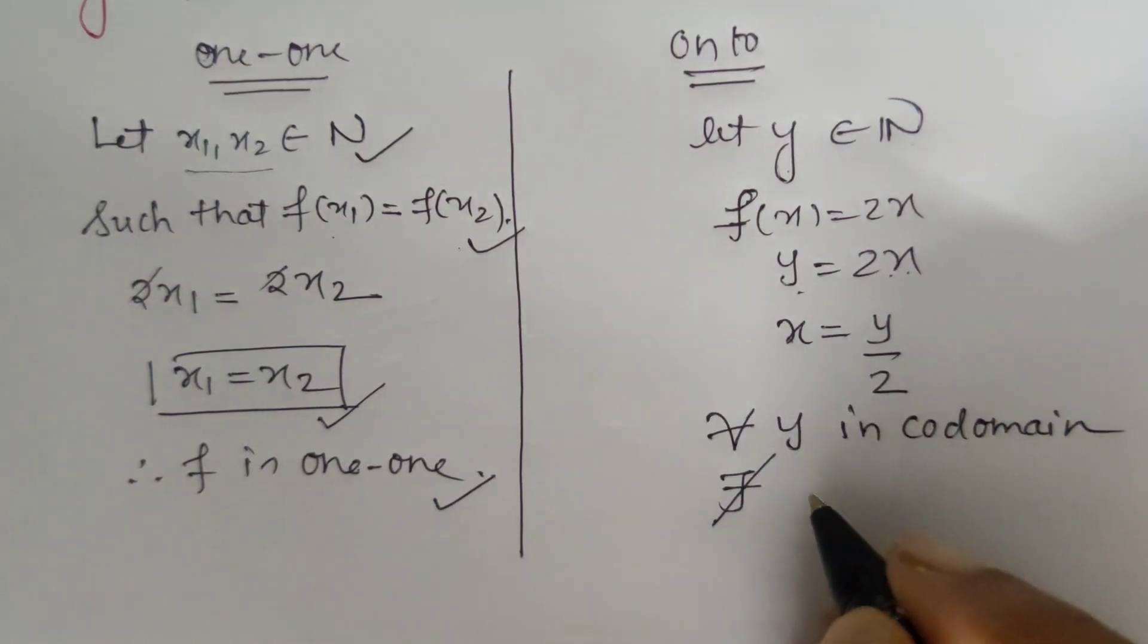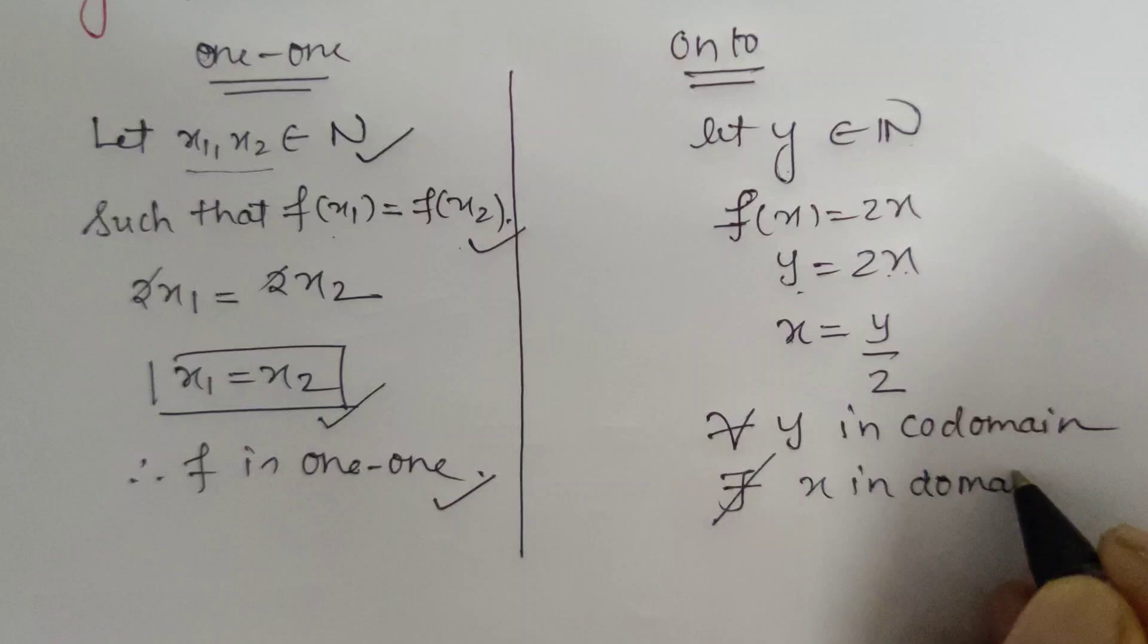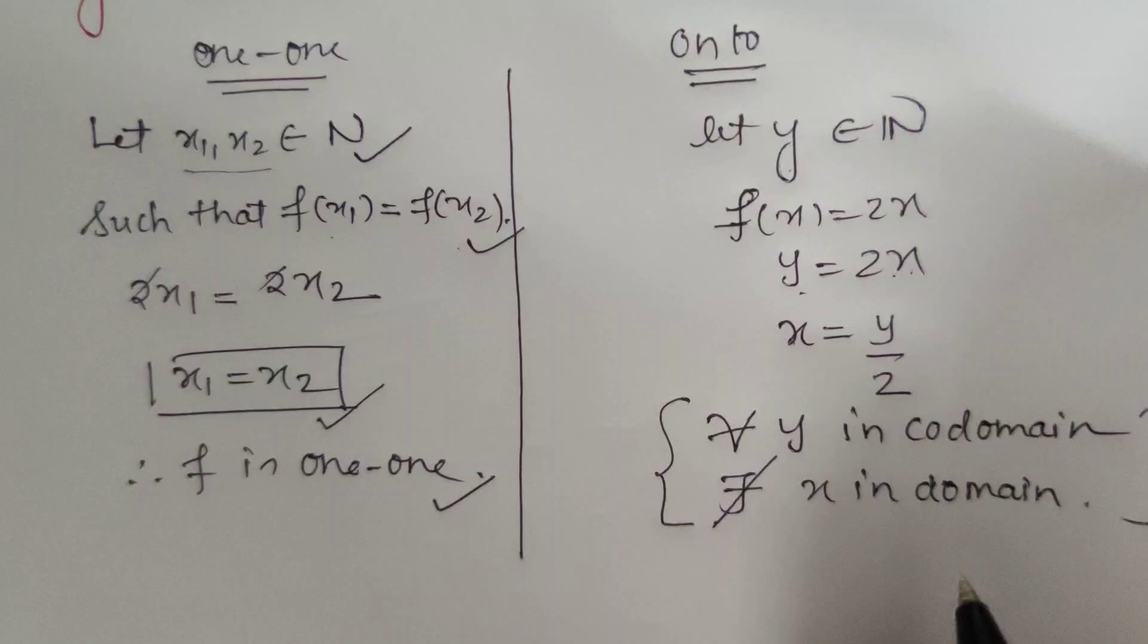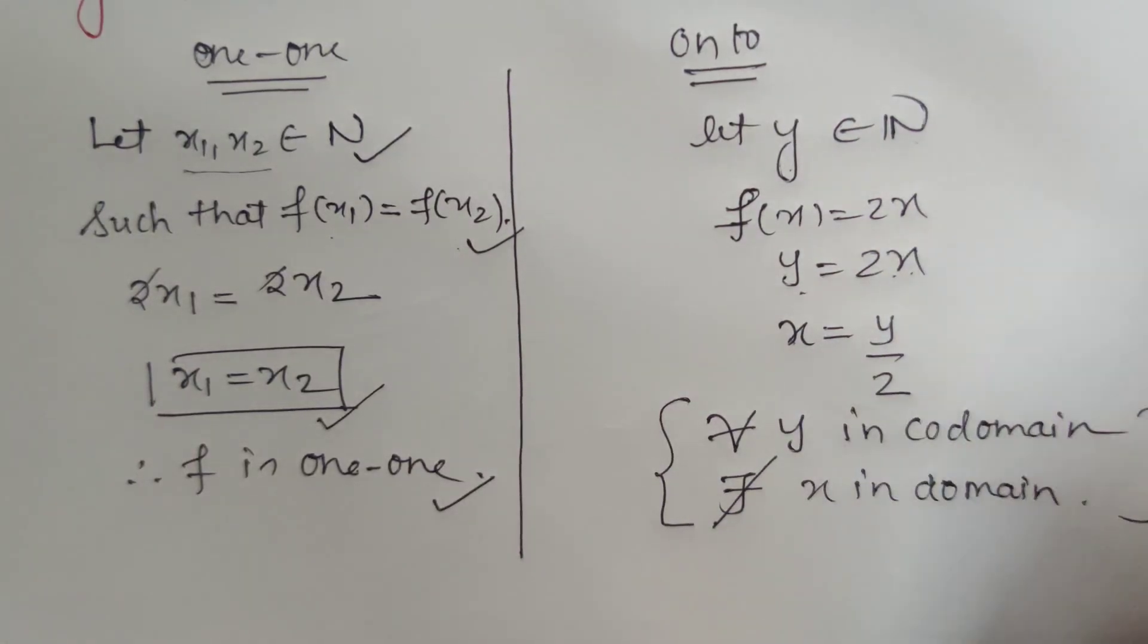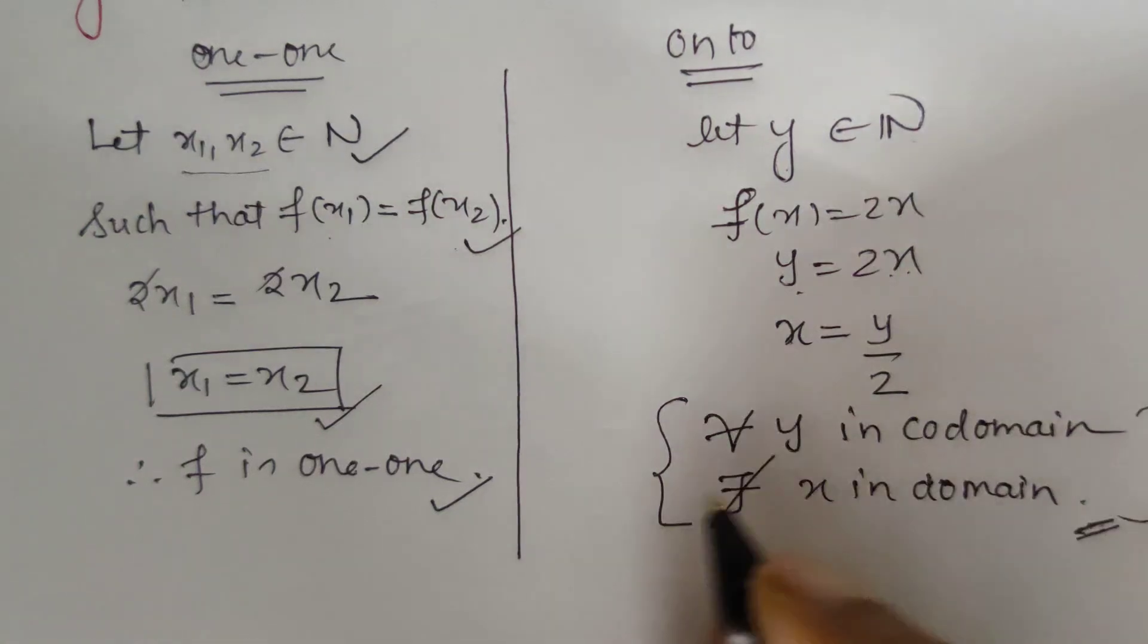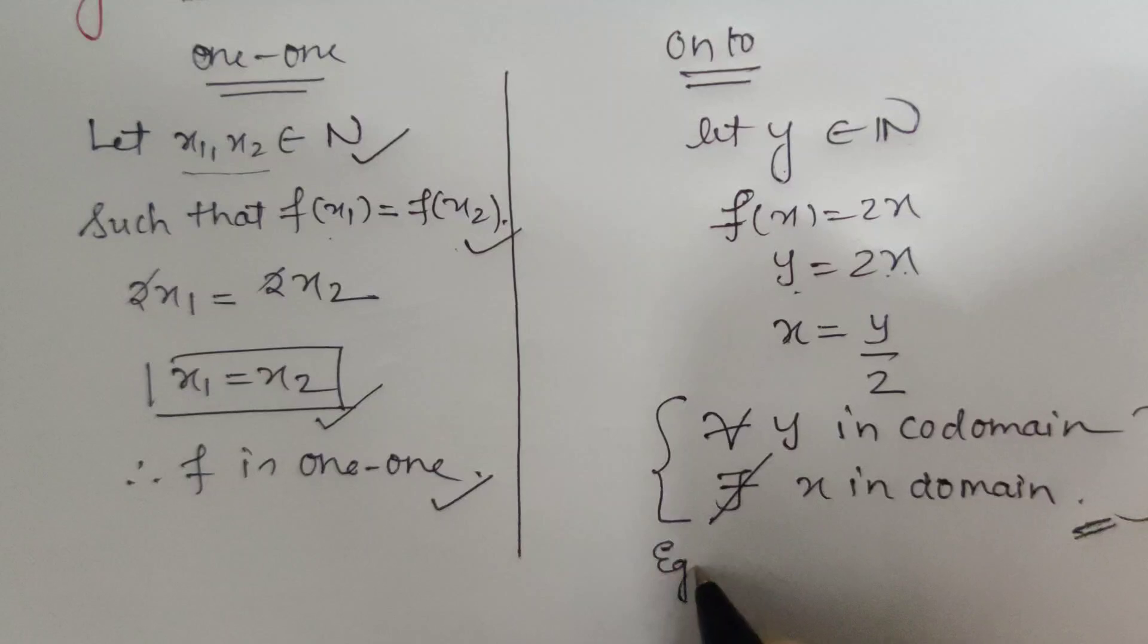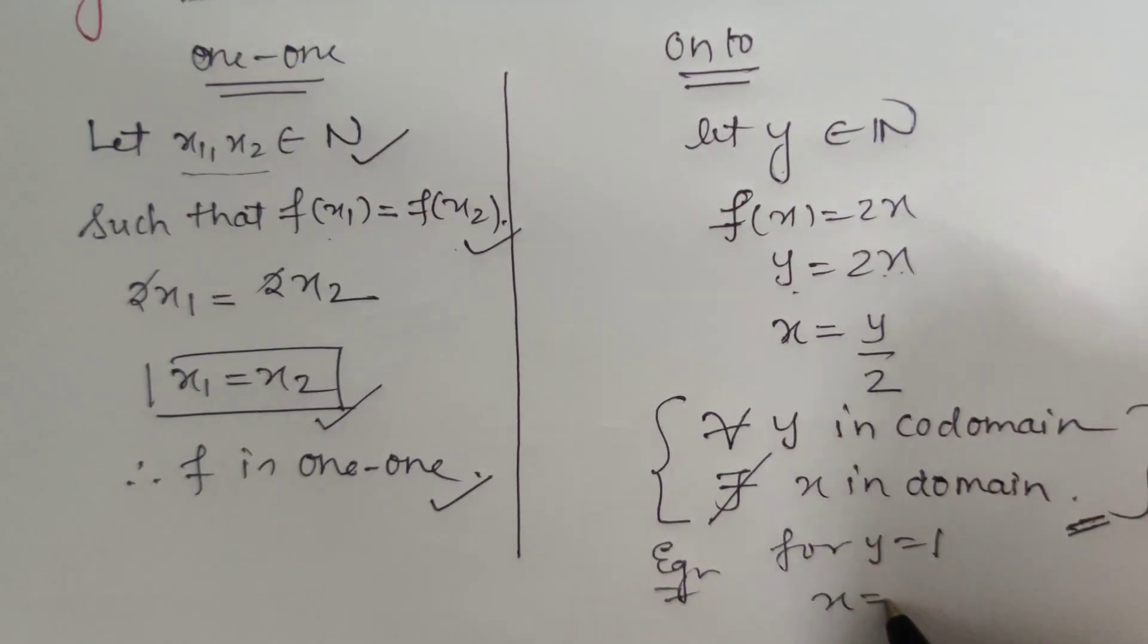X in domain - and this step is very important for students to write because this earns the marks for the problem. This is where students lack in giving the justification. For every y, for example, you can give that for y equals 1, x equals 1/2.